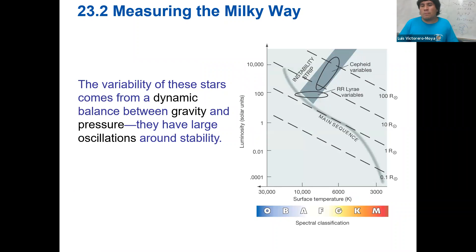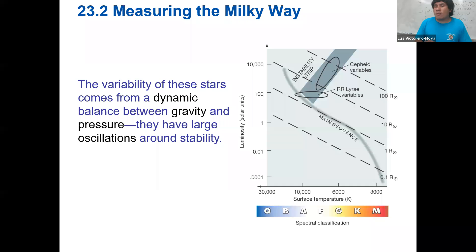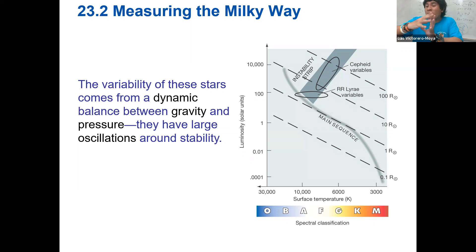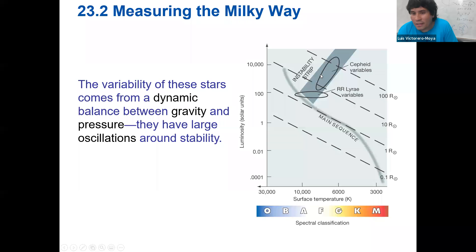Where do we find these variable stars? In the instability strip. You may have found a couple of stars in that zone in the lab, and many stars in Stellarium are classified as variable stars, but the variability is so tiny that they don't really fall in the instability strip. In the instability strip we normally locate Cepheid variables because they have very long periods of variability. The luminosity can change dramatically — a lot.